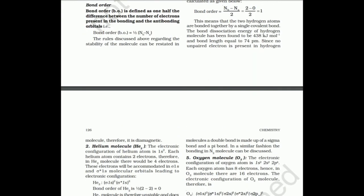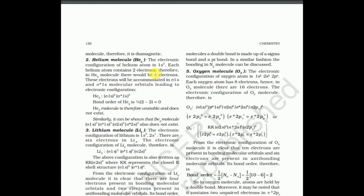Next example: He2 molecule. He2 would have 4 electrons. The configuration is sigma 1s², sigma star 1s². The bond order is ½ × (nb − na) = ½ × (2 − 2) = 0. Since the bond order is zero, He2 is unstable and does not exist. This explains the 2018 exam question.